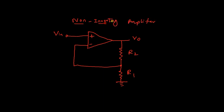The input is given to the positive terminal of the op-amp, so you will get an output which is non-inverted. Hence, it is called a non-inverting amplifier. As you can see, this is the output, and there are two resistors. This is our feedback loop.